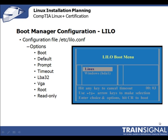In case you happen to run across Lilo on an older system, you should still understand how to use and configure it. Its configuration file is located in /etc and has two sections: a global section and a per-image option section. The syntax for each statement in this file is option=value. The options include: boot, which specifies the device containing the boot sector; default, which sets the default kernel or OS to boot; and prompt, which issues a boot prompt for user input.